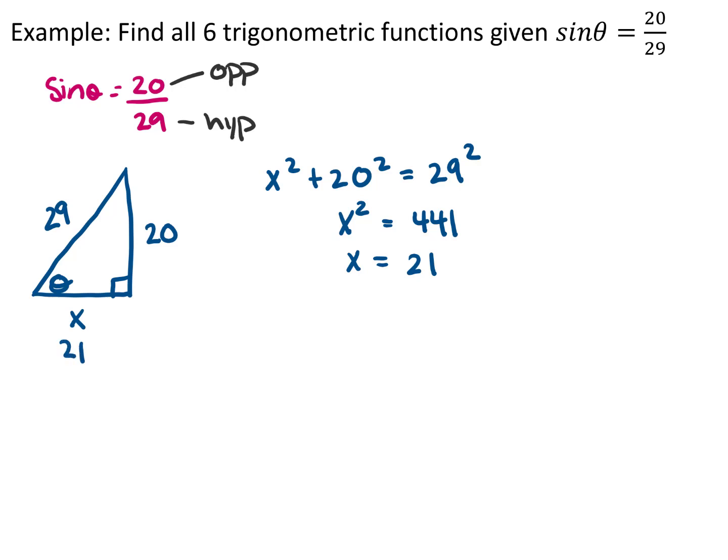Now the question says find all six trigonometric functions. We already are given sine, so that means that we actually have the reciprocal one before doing any of that math. It's going to be cosecant, 29 over 20. We're just taking the reciprocal of what was given to us.